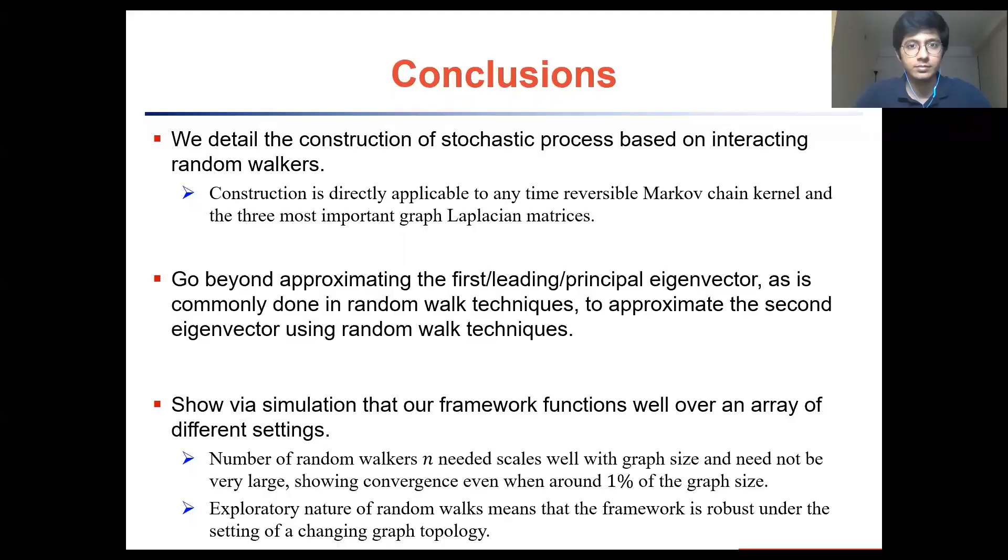In conclusion we note that in this work we have detailed the construction of a stochastic process based on multiple interacting random walks. We designed an interaction mechanism between two groups of random walkers where they compete over a graph such that it helps us go beyond approximating just the leading eigenvector of Markov chain kernels, and we use it to approximate the second eigenvector of any time reversible Markov chain kernel and graph Laplacians. This is all. Thank you so much for watching this video and stay safe.